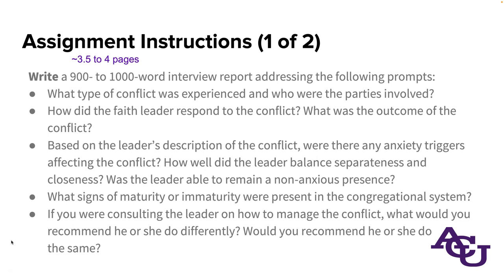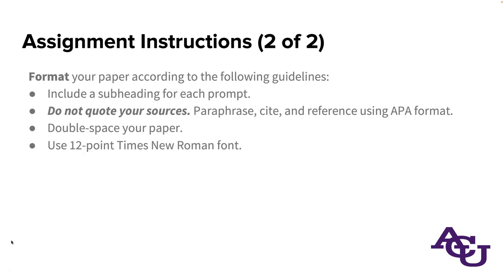The prompts continue: Were there any anxiety triggers? How did they balance separateness and closeness? Was the leader able to remain a non-anxious presence? — very important, because sometimes people try to help and don't, because everyone gets more anxious when they're anxious. What signs of maturity or immaturity were present in the congregational system? And if you were consulting the leader on how to manage the conflict, what would you recommend they do differently, and what would you recommend they do the same?